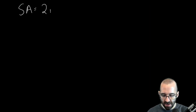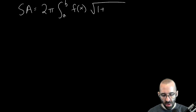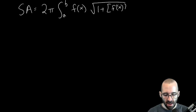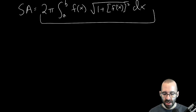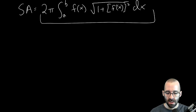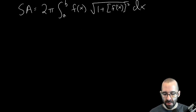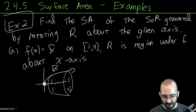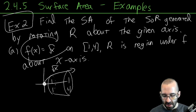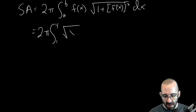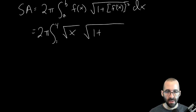The surface area formula tells us: SA = 2π times the integral from a to b of the function times the square root of 1 plus its derivative squared. I highly recommend writing it out every time — it's much easier to substitute using the formula one line at a time. In our case, the integral is from 1 to 4 of the function √x times √(1 + (f'(x))²).